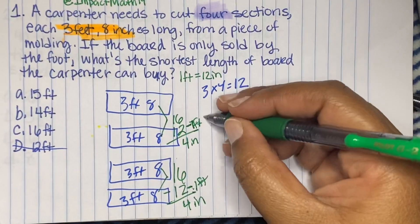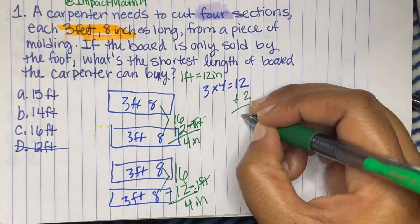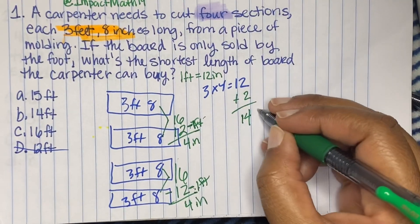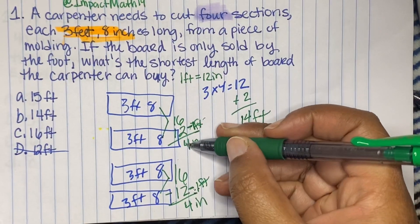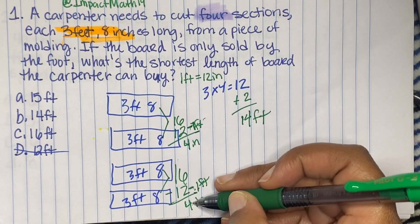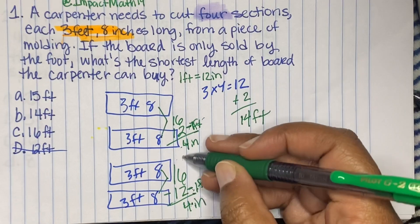So we're taking out one foot here, and we're taking out one foot here. So we can add these two feet that we took out to here. So that would be 14 feet. But we still have four inches here, four inches here.